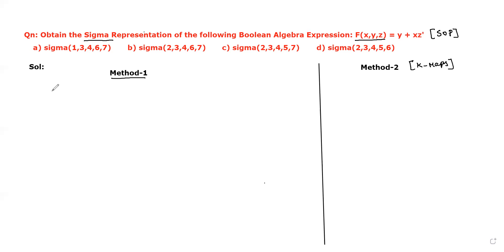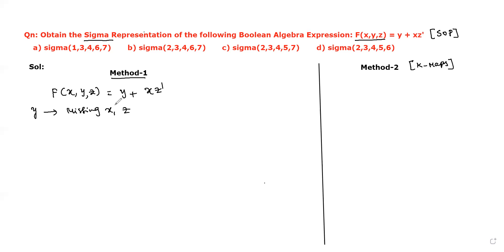Method 1: The given Boolean function f(x,y,z) = y + xz'. Now let us take the two products separately. The first product is y. In this product, the missing variables are x and z. We have to insert these missing variables along with y without changing the meaning or value of y.